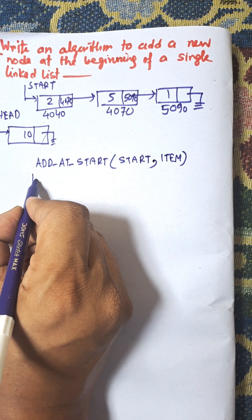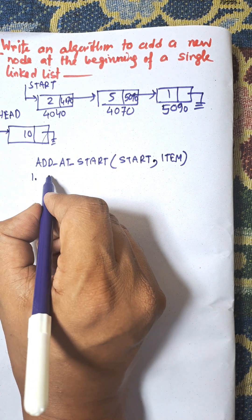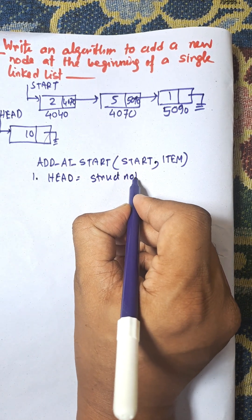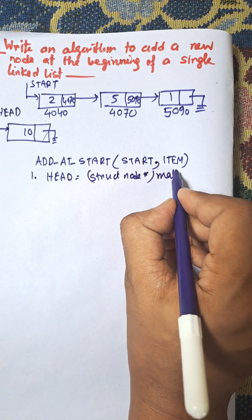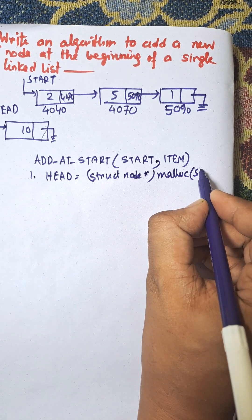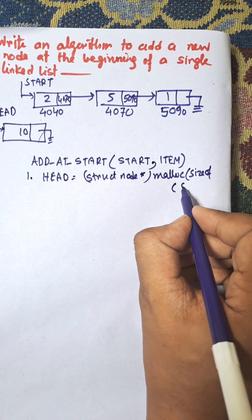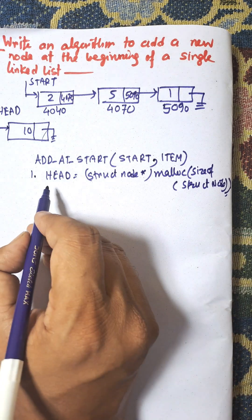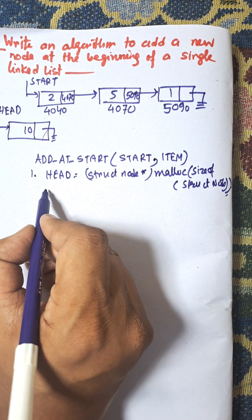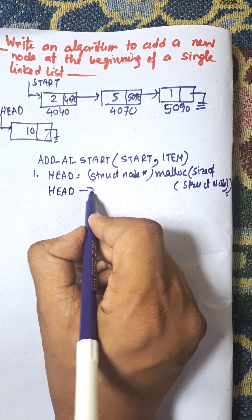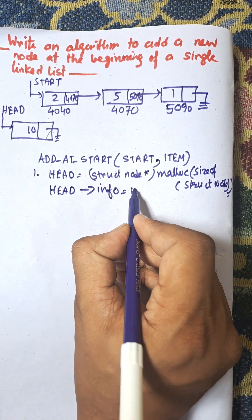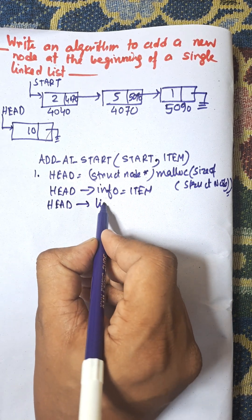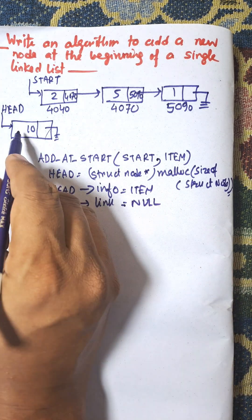Step 1: Create the new node. Head equals malloc of size of struct node — this allocates memory for the new node, which is held by the pointer head. Now set head->info equal to item, and head->link equal to null. The first new node is created.